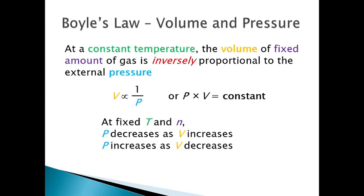Boyle's Law: Boyle was able to determine that if you hold a gas at a constant temperature and a fixed amount of that gas, there is going to be an inverse relationship between volume and pressure. Please note the color-coded key terms: constant temperature and fixed amount — meaning you are not heating your gas sample, not putting it in the freezer, and not changing the amount. If you increase the volume, your pressure is going to decrease, and vice versa.